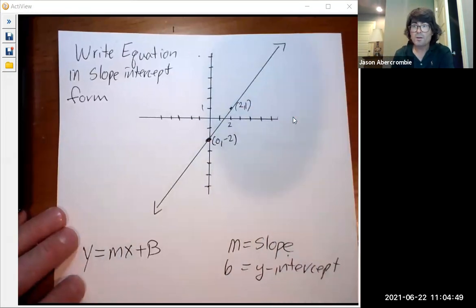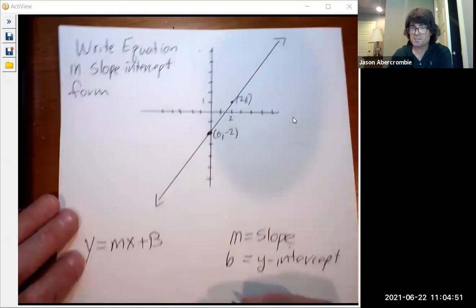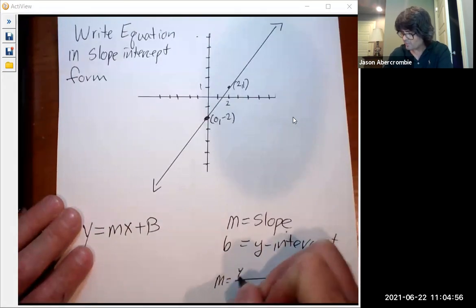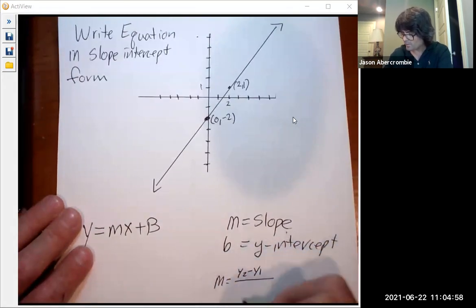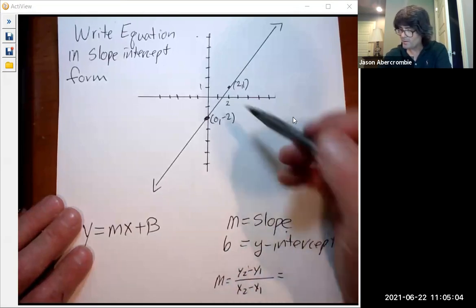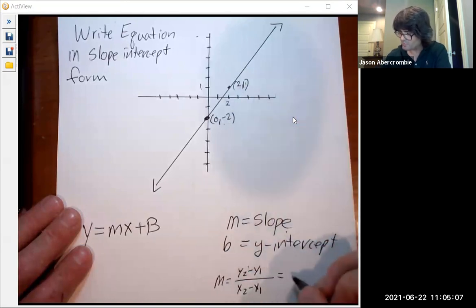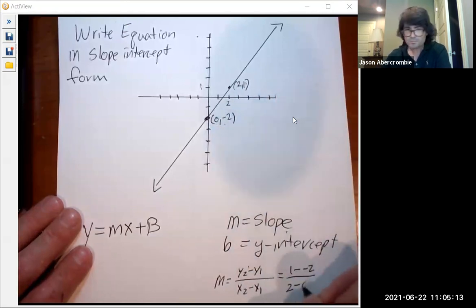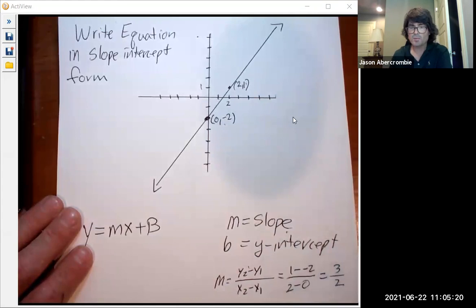So if you know two points, you can definitely find the slope because the slope is always the change in the y's over the change in the x's, the rise over the run. Here my y's are, we'll say 1 minus negative 2, and then 2 minus 0. That's going to be 1 minus a negative is a plus, so it's going to be 3 over 2 slope.